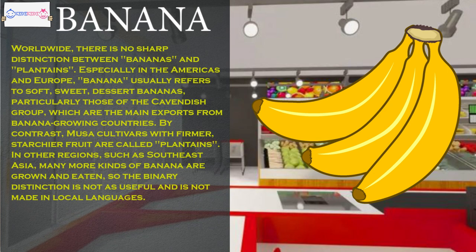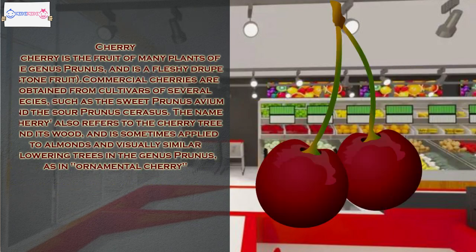By contrast, Musa cultivars with firmer, starchier fruit are called plantains. In other regions, such as Southeast Asia, many more kinds of banana are grown and eaten, so the binary distinction is not as useful and is not made in local languages.